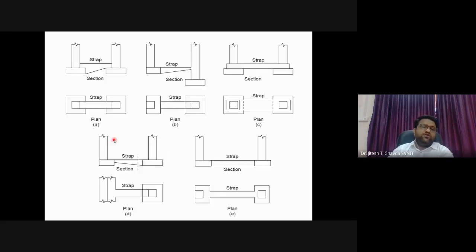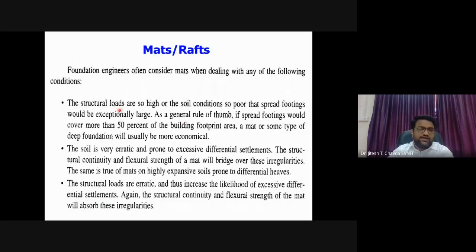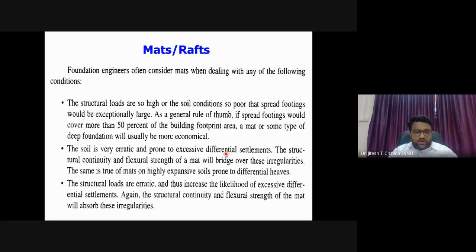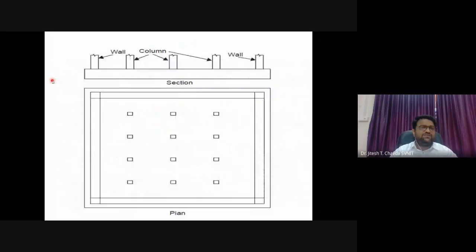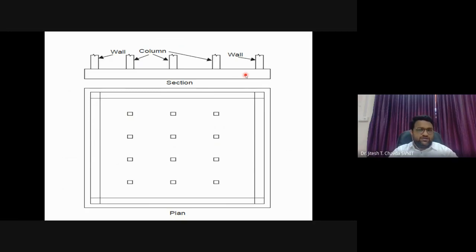A mat or raft foundation is used when: structural loads are very high with poor soil conditions, isolated footings cover more than 50% of the total area, soil is erratic and prone to excessive differential settlements, structural loads are also erratic, there are large lateral or uplift loads, or when the structure is below the water table and must be waterproof. All columns are connected by a single footing.